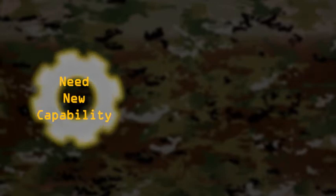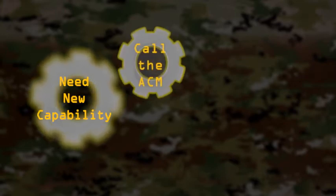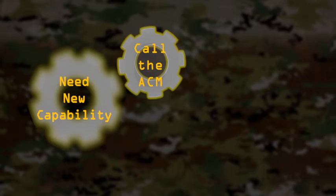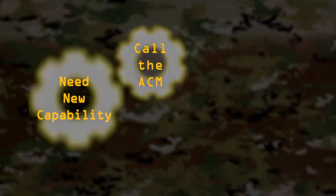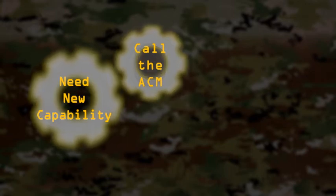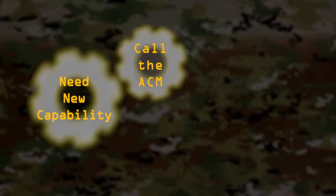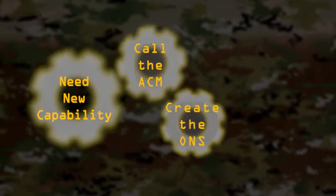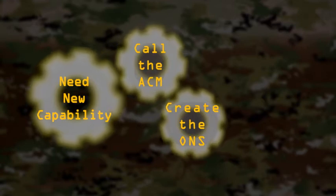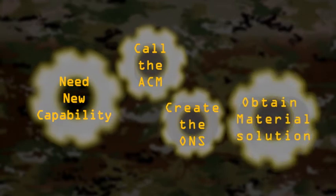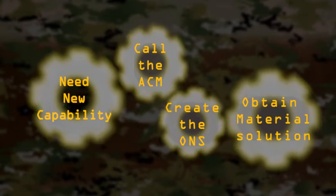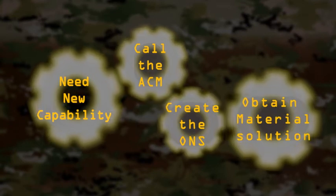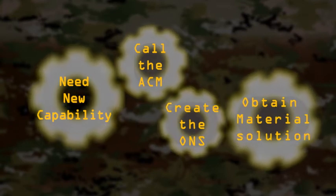Why does this matter to you? Let's say you have a need for a new capability but you're not sure how to get it. Contact Army Futures Command and ask for a point of contact from an ACM that supports the warfighting function your capability falls under. Capability developers in an ACM will assist you with creating an operational need document that outlines the capability you desire. The ACM will subsequently analyze and convert the needs from this document into requirements for an ICD, RDP, or CD to help you obtain the material solution to fulfill your need.